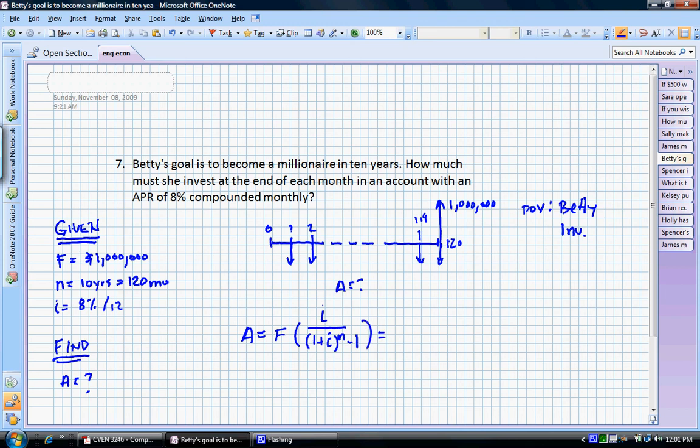In this problem, we're using $1 million. This is what Betty wants to have, our I is 0.08 over 12, over 1 plus 0.08 over 12, to the N, and our N is 120, and subtract 1.